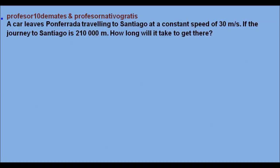Hello everybody, welcome back to Profesor Diez de Matis and Profesor Nativo Gratis. This new video, the question is the following: a car leaves Ponferrada traveling to Santiago at a constant speed, and this is very important, constant speed. I'm going to underline it, a constant speed of 30 meters per second.